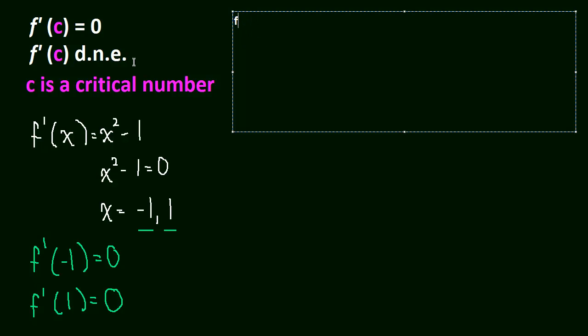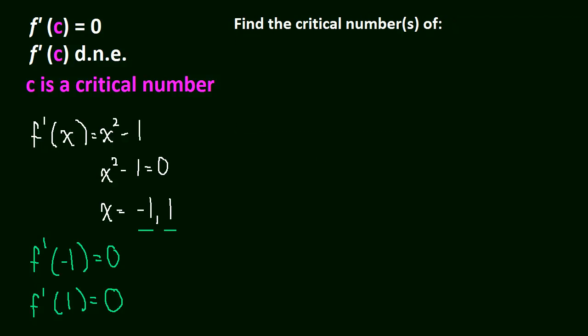So find, maybe that should be a little bit bigger. Find the critical numbers, and let me just put it like this. Let's do x squared minus 4 all squared. So let me just kind of block this off. So, to find these critical numbers, what are we going to do?